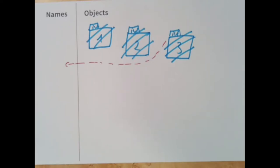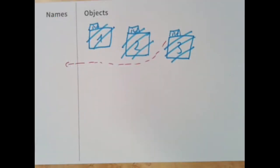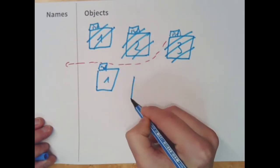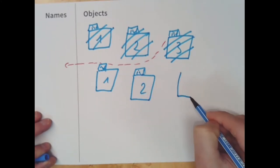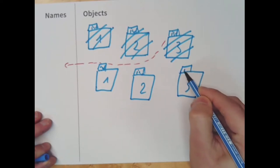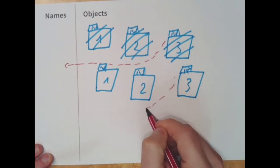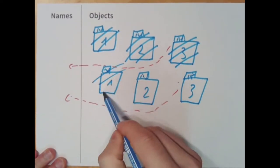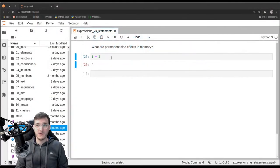If I go ahead and re-execute the same code cell a second time, it will simply create a new integer object with value 1, a new integer object with value 2, they do the addition, creating a third integer object, and then a reference to the third one is given back. But again, because we are not doing anything with the reference, all the objects are garbage collected again. So we don't have a permanent side effect in memory.